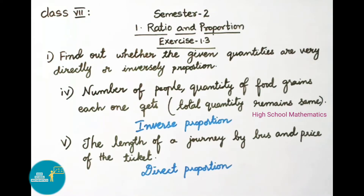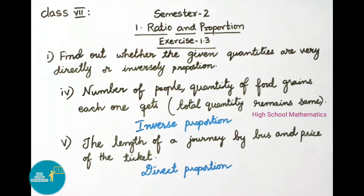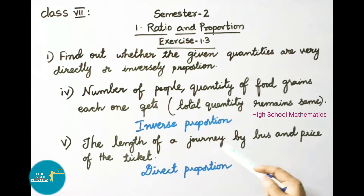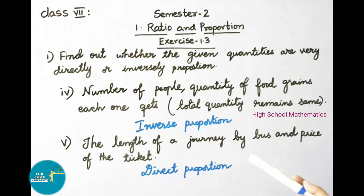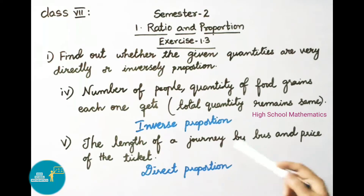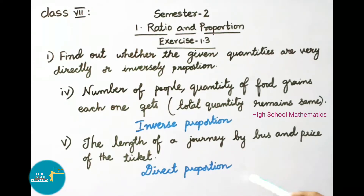Fifth one: the length of a journey by bus and price of the ticket. Here if one quantity increases the other also increases in the same proportion. If one quantity decreases then the other quantity also decreases in the same proportion. So the given quantities are in direct proportion.